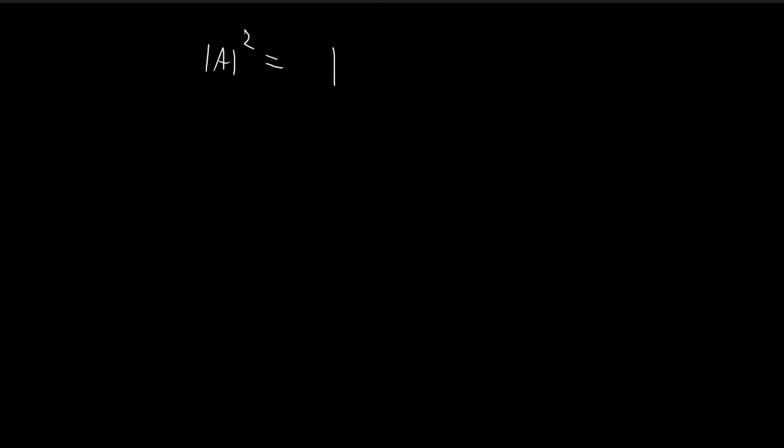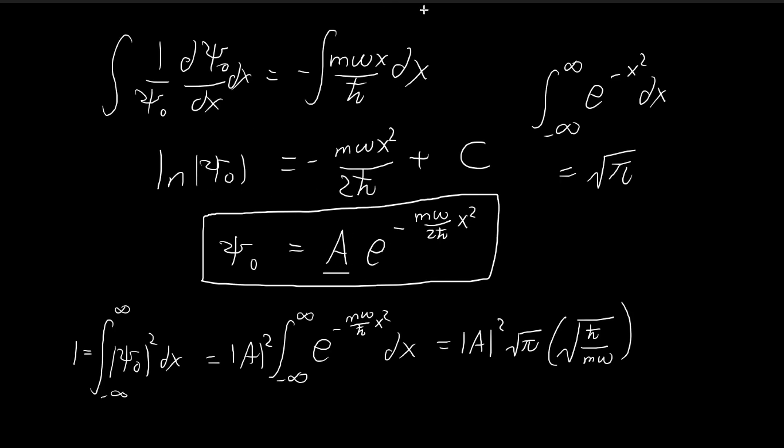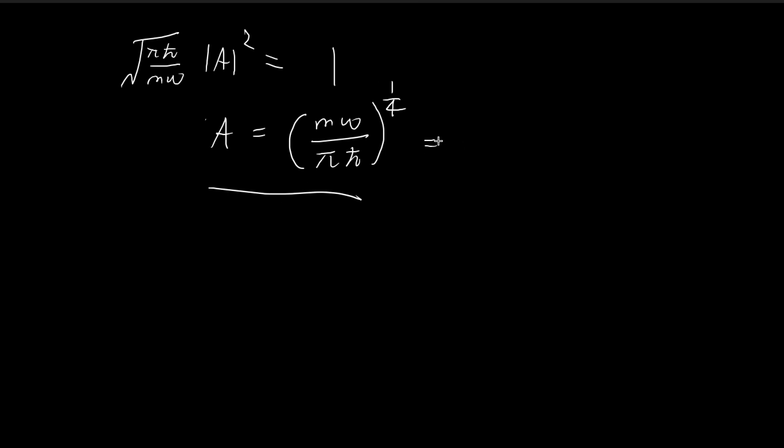Now we've arrived at an expression that allows us to see what A should be. On the right-hand side, all this should equal 1, and on the left-hand side, you have πℏ/mω. So A equals (mω/πℏ)^(1/4).